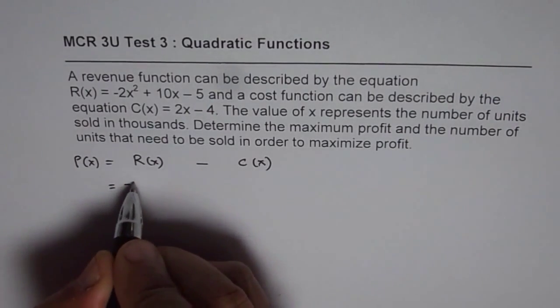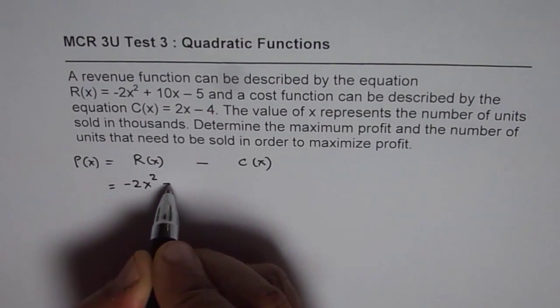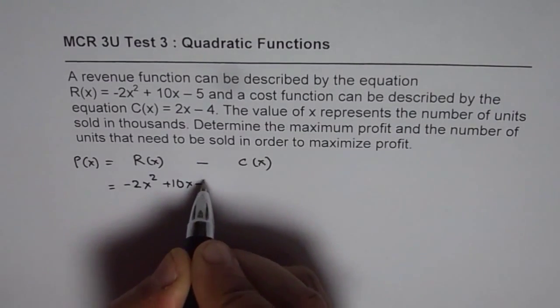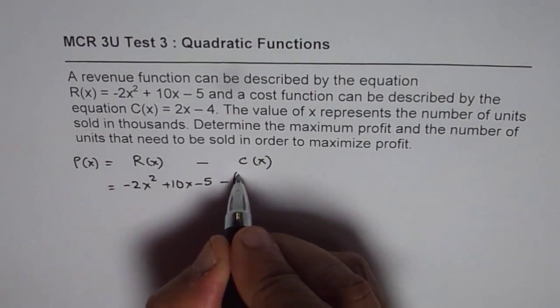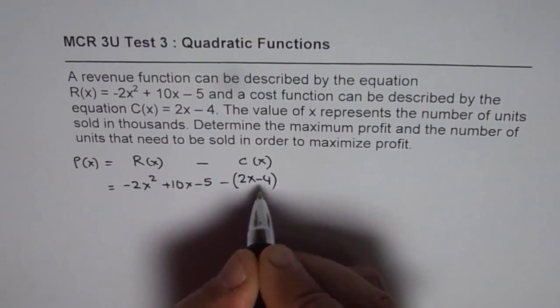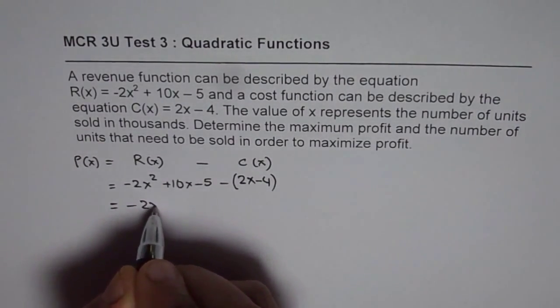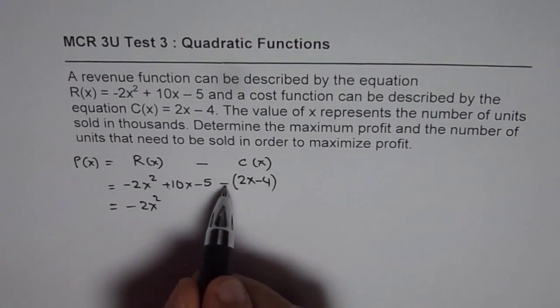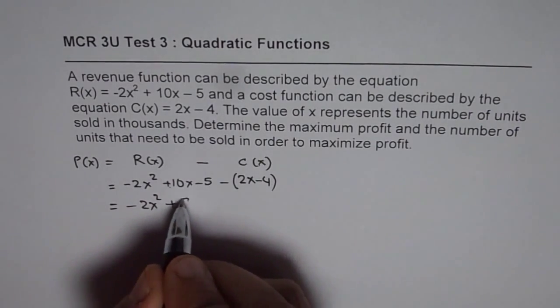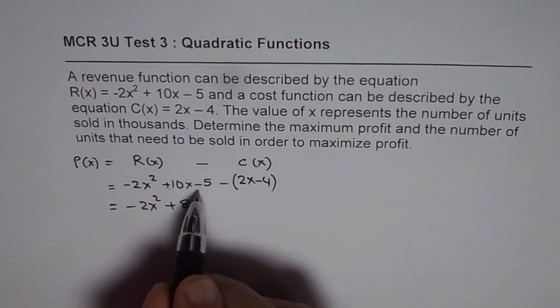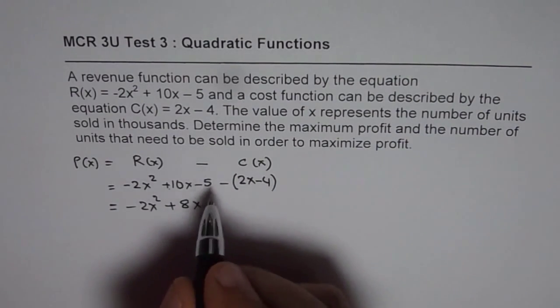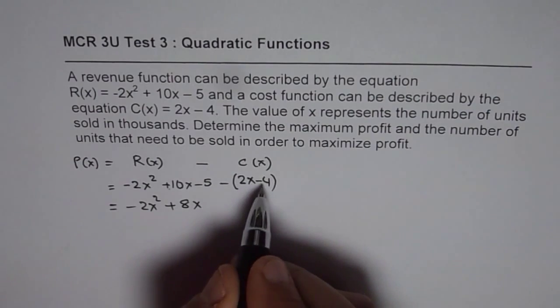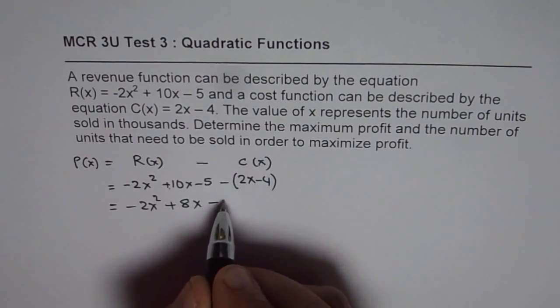Revenue is minus 2x squared plus 10x minus 5. Takeaway cost function. It's good to write it in brackets. Then we will open the bracket and simplify. So we have minus 2x squared. 10x minus 2x is 8x. We get 8x. Now we have minus 5 and minus and minus becomes plus. Actually it is minus 5 plus 4.